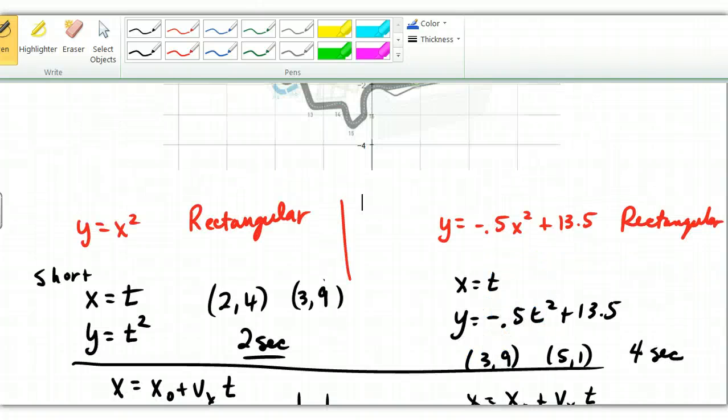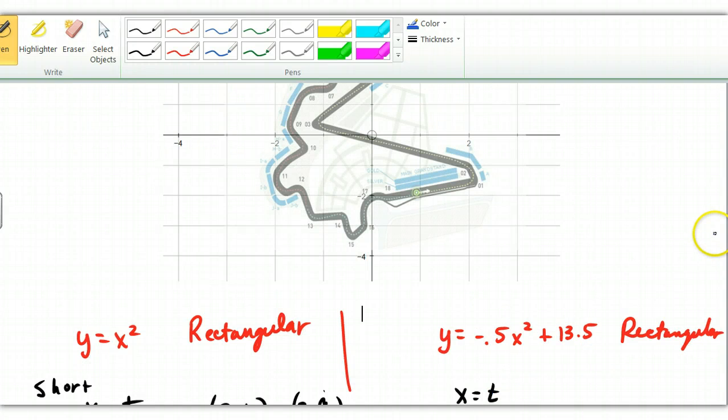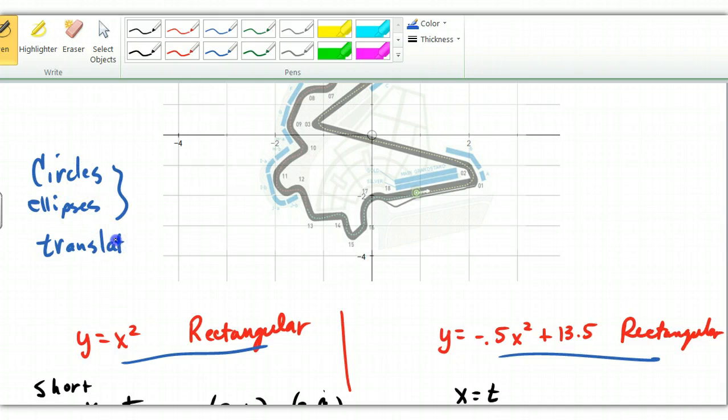So you have to do two things. First you have to do the shortcut, rewrite these things with x equal to t and your y value. Then you have to linearize the x and take whatever that x is and plug it in for the t for my y equation. That should work. Now this is only if you have a straight rectangular equation. If you were doing your circles or your ellipses you don't have to do this linearization. All you have to do is the simple translation because these are already in a form that's for parametrics.